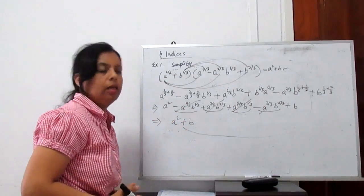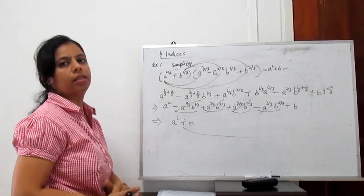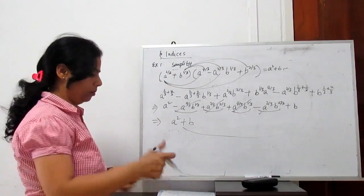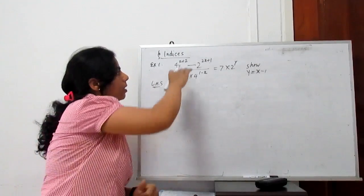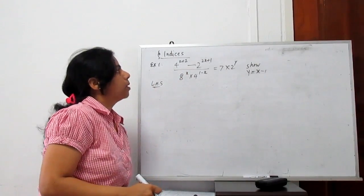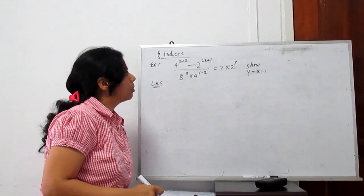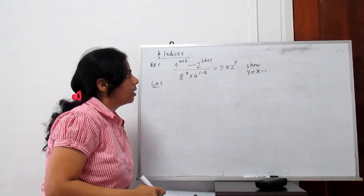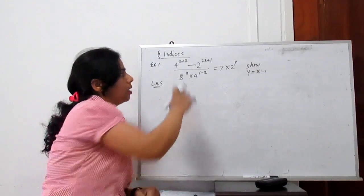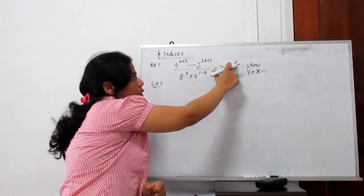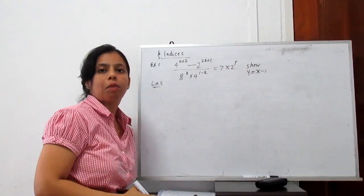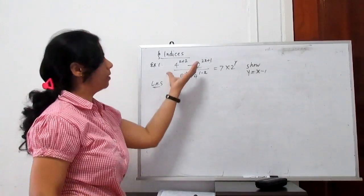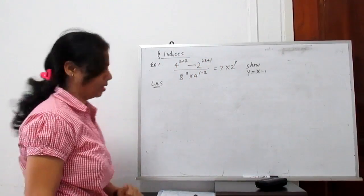You really need some practice to learn how to simplify these types of indices. Proceeding with another problem: simplify the equation 4 to the power x plus 2, minus 2 to the power 2x plus 1, all divided by 8, divided by 8 to the power x times 4 to the power 1 minus x. Given this equals some expression, show that y equals x minus 1. We start with the left hand side and compare with the right hand side.